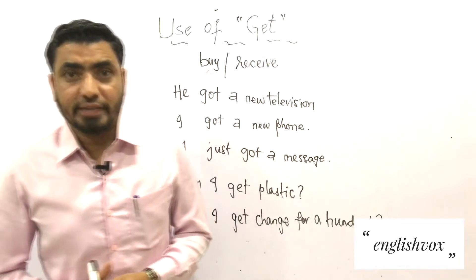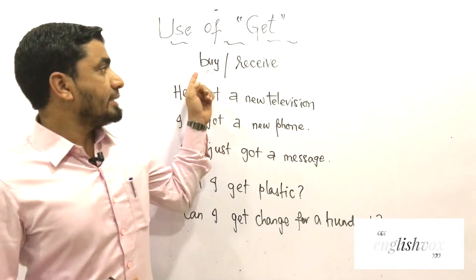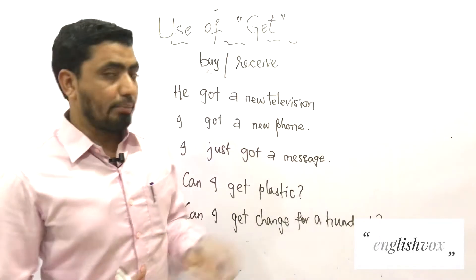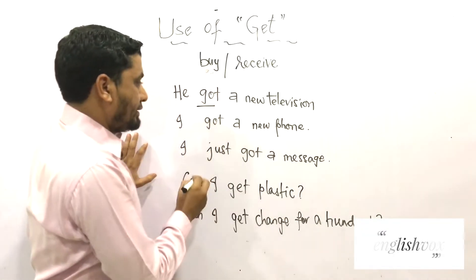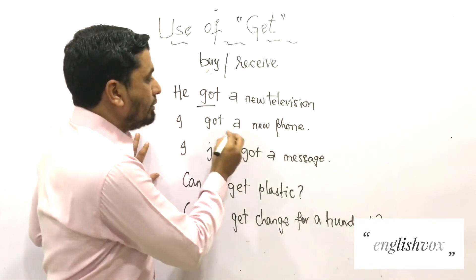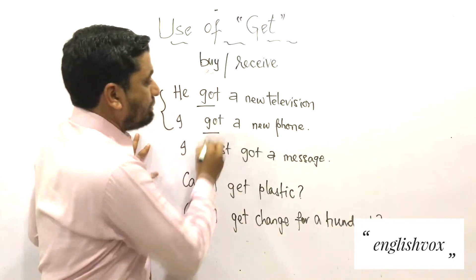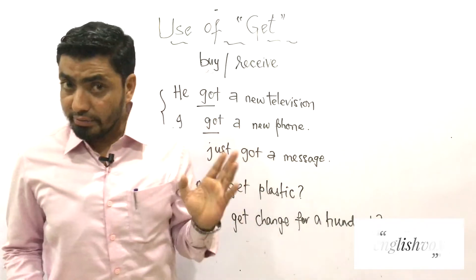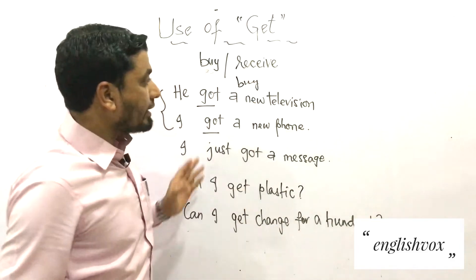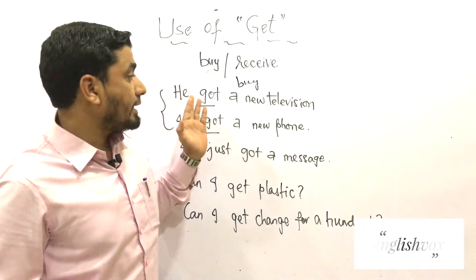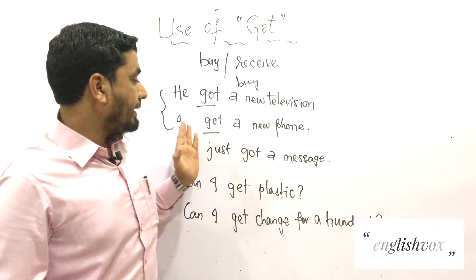So the first use of 'get' says that it is used to buy or receive something. For example: 'He got a new television', 'I got a new phone'. Look at these two examples. Here 'get' is giving the meaning of 'buy'. It means he has bought a new television, and I have bought a new phone.